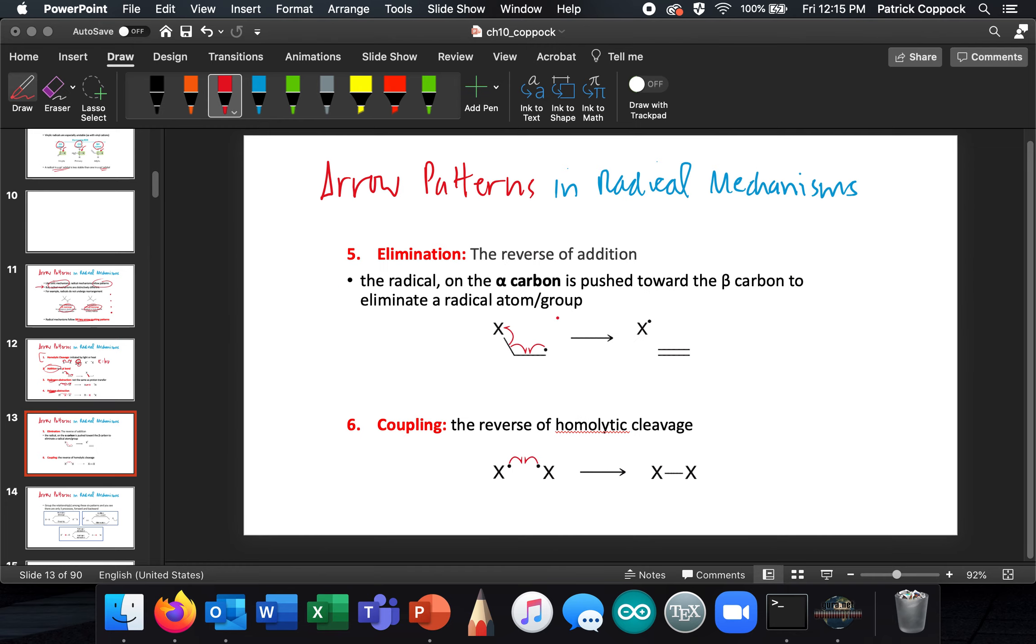And where are we here? We have elimination, and that is the opposite of addition to a pi bond. Can you see this is a reverse of addition? See what's going on here? Exactly opposite of what we had a minute ago. Coupling, which is where you get the two radicals coming together to make a bond. You see that? There's the new bond. This is the opposite of homolytic cleavage.